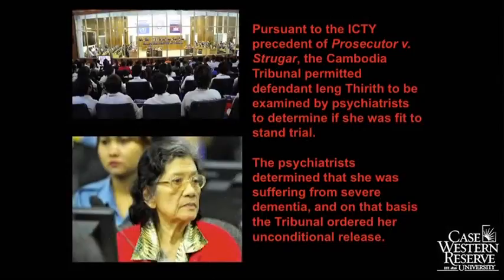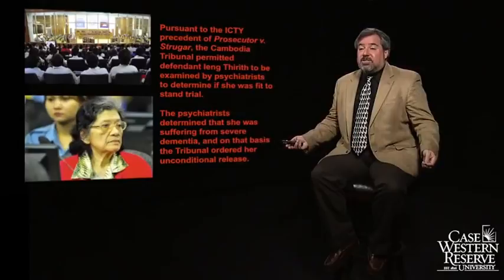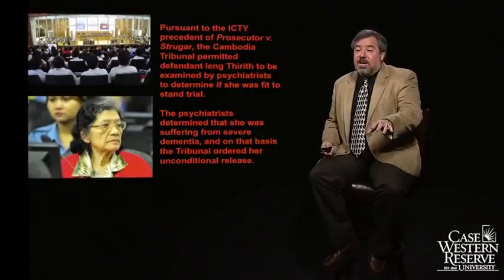One of the people being prosecuted is Madame Lange Thereth, the third most powerful person during the reign of Pol Pot and the Khmer Rouge, who was highly responsible for the Killing Fields atrocities. Based on the Strugar case that came up before the Yugoslavia Tribunal, her defense said she needed to be examined because she was suffering from dementia. The psychiatrist determined she probably had advanced senility caused by Alzheimer's and wasn't able to understand what was going on, so the tribunal ordered her released unconditionally. She has walked away from justice — succeeding on the very thing that Rudolf Hess tried to accomplish.